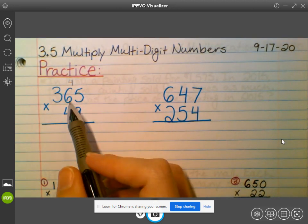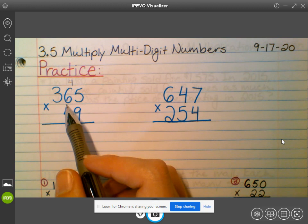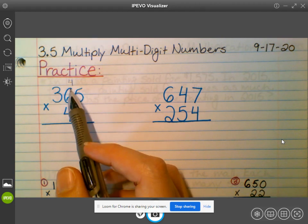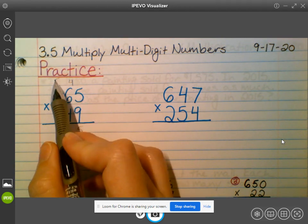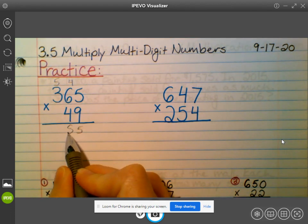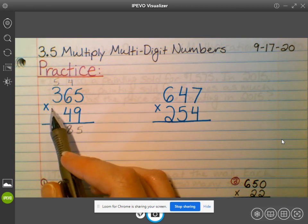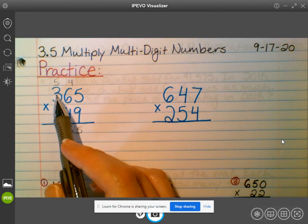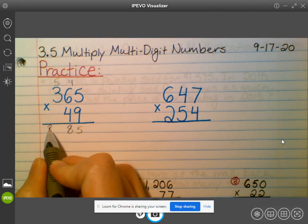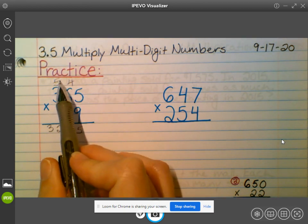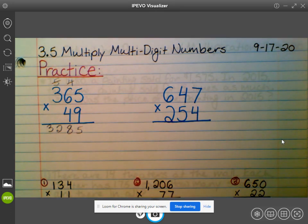Then we're going to take nine times six. 54 plus four would be 58. Carry our five, bring down the eight. You should be doing this in your notebook along with me. Nine times three is 27. 27 plus five would be 32. Then I'm going to go up here and cross out the numbers I carried. I like to cross it out. That way, if I were to make a mistake, I can go back and see what numbers I carried.